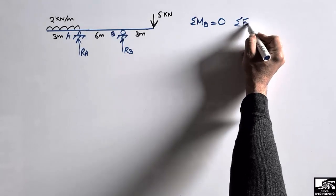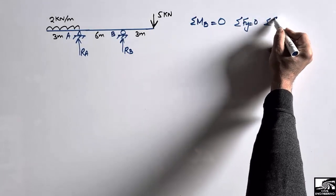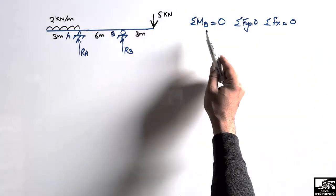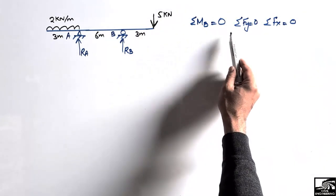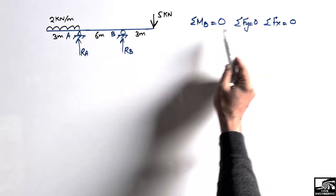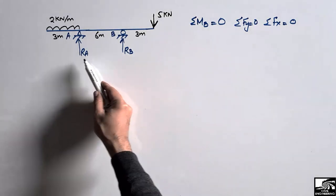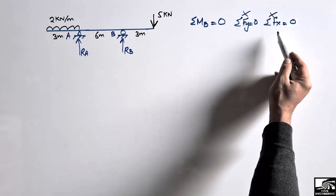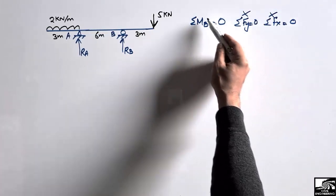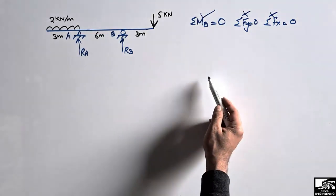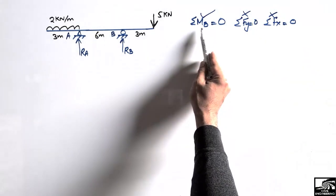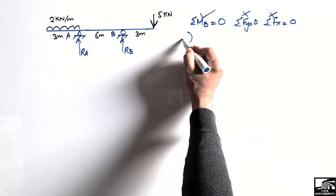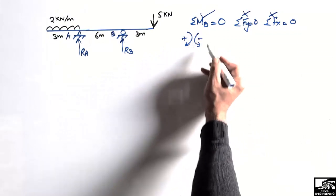These three equilibrium equations are used to find support reactions in the case of a statically determinate problem. We have two unknowns, so we cannot use the horizontal force equation. We are only using the moment equation for now. Let's suppose summation of moments at point B is equal to zero. Clockwise moment is taken as positive while anti-clockwise is taken as negative.